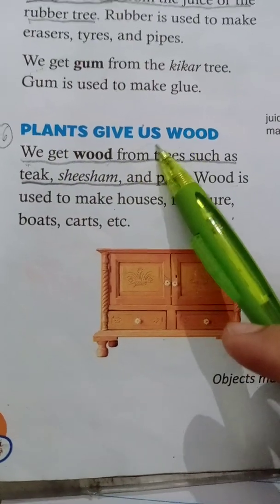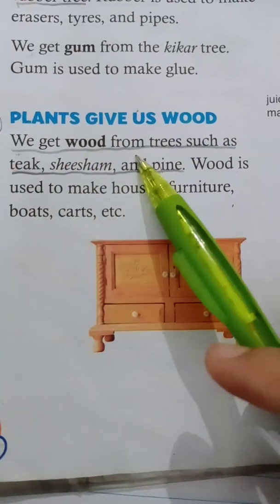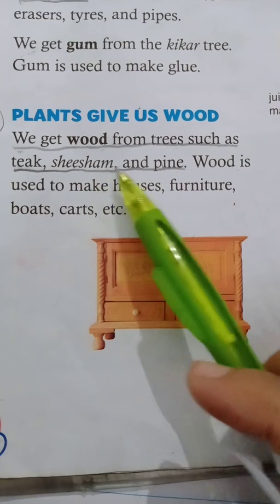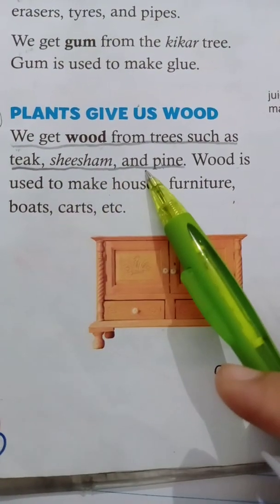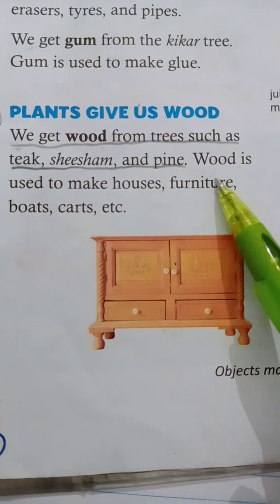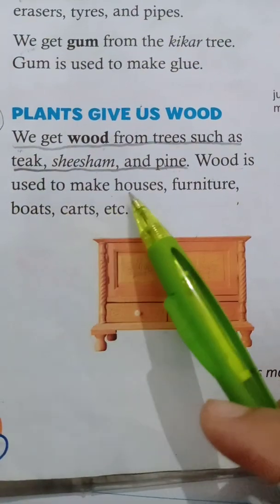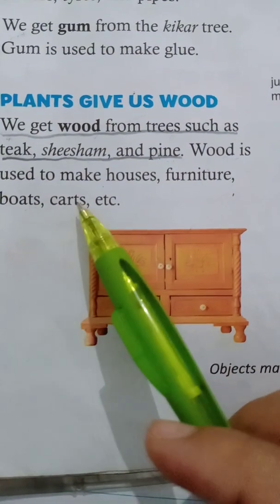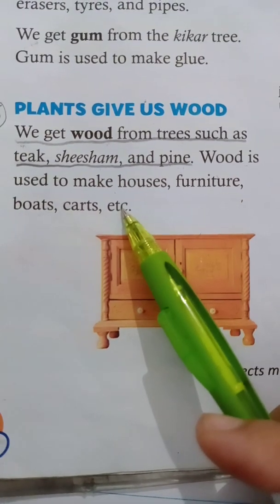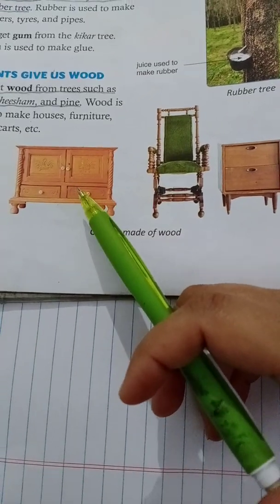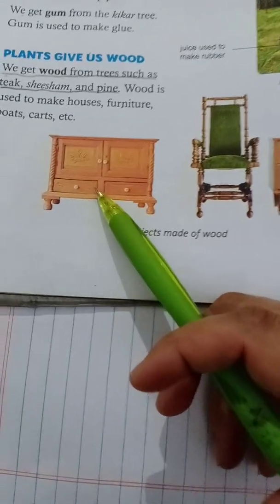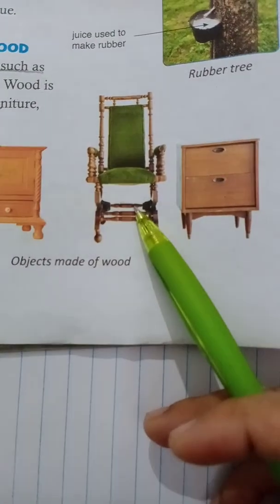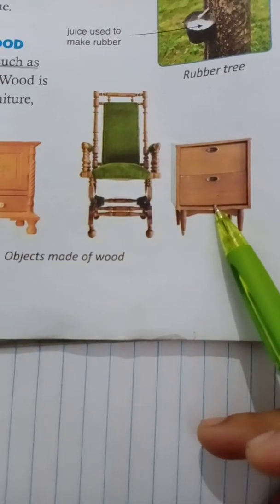Plants give us wood. We get wood from trees such as teak, sesham and pine. Wood is used to make houses, furniture, boats, carts, etc. Here are some examples of furniture — you can see a cupboard, a chair and a wooden box.